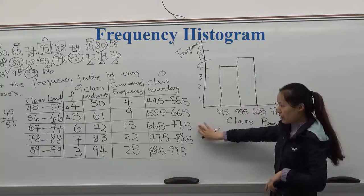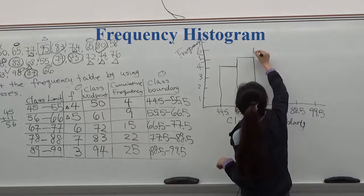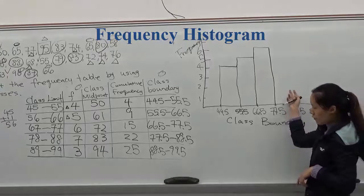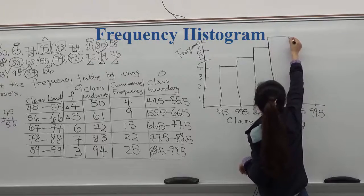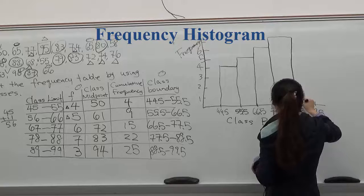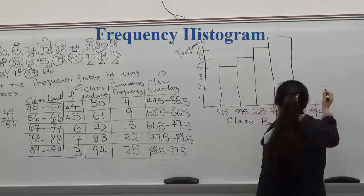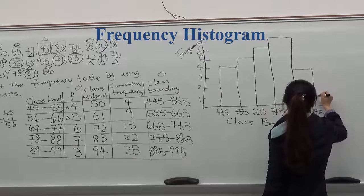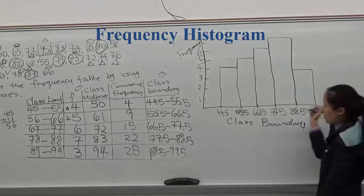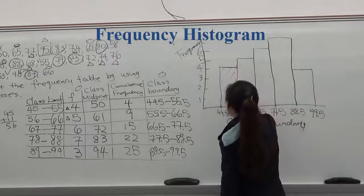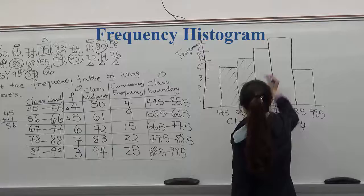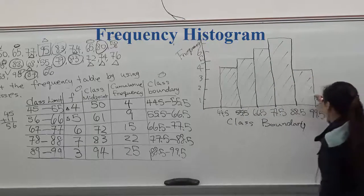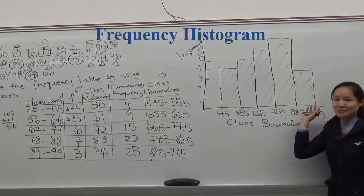And the third one, the frequency is 6. And 7 for the fourth. And we know the last frequency is 3. So you put 3 for the class boundaries of 88.5 to 99.5. And just shape the bar. This is the frequency histogram.